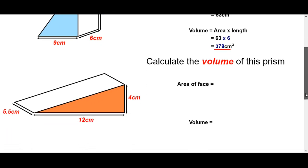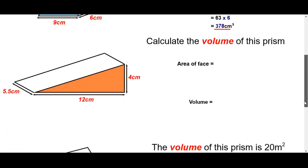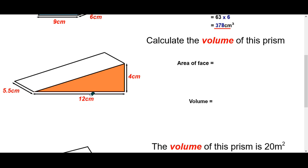Let's try another one. So calculate the volume of this prism here. So again, the first thing we need to do is identify what the face part of the prism is. Now, it's this triangle at the front, because this is the triangle continues all the way through the prism to the other side. So this is the area of the face we have to work out first. So it's a triangle again. Half base times height.